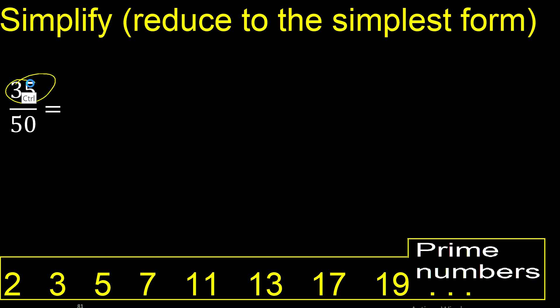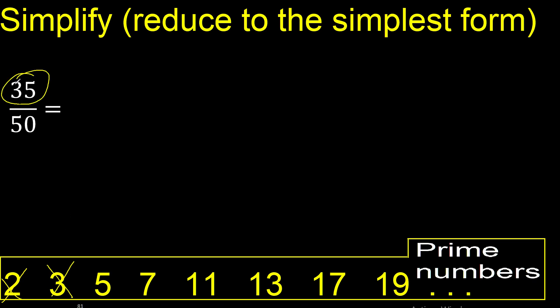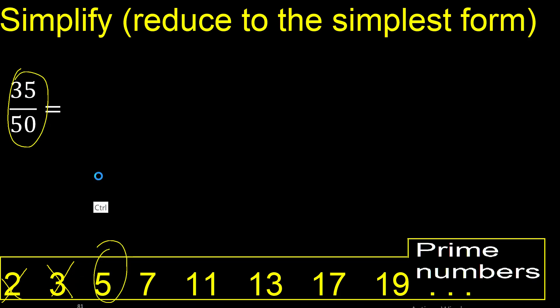Can 35 and 50 be divided by the same number? They cannot be divided by 2 because 35 cannot be divided by 2. They cannot be divided by 3 because 3 plus 5 is 8, and 8 cannot be divided by 3. They can be divided by 5: 35 divided by 5 is 7, and 50 divided by 5 is 10.